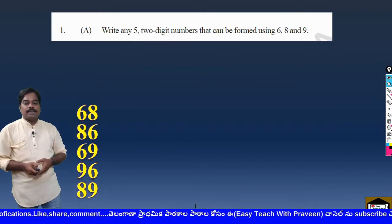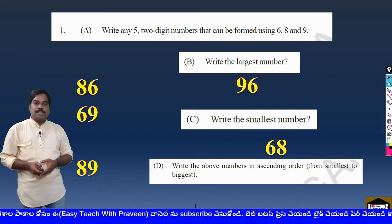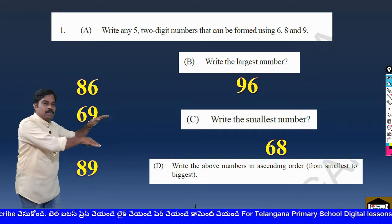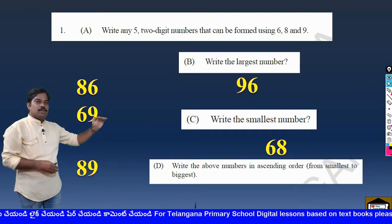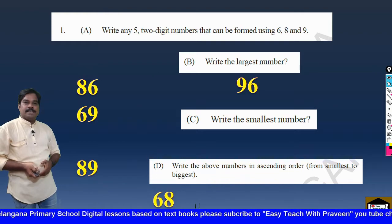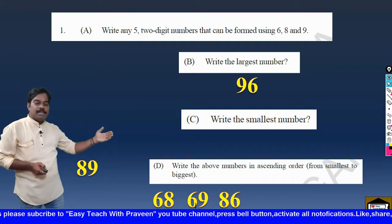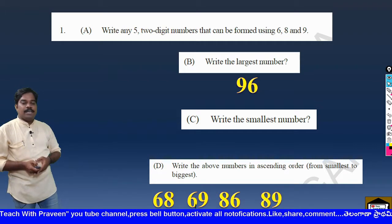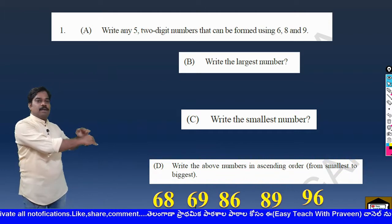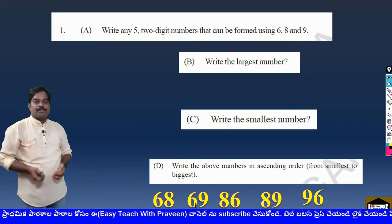Now the third question: Write the above numbers in ascending order, from smallest to biggest. Ascending order means arranging from small to big. So the smallest number first is 68, then 69, then 86, then 89, and the largest number last — 96. We have taken 5 numbers and arranged them in ascending order: 68, 69, 86, 89, 96.